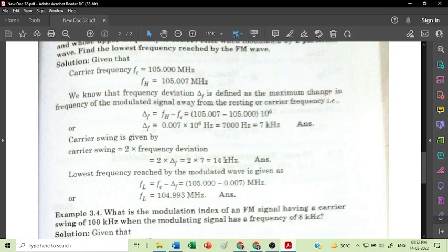Now carrier swing is 2 times of frequency deviation, that is twice delta F. And here delta F is 7 kHz, so 2 into 7 kHz is 14 kHz.